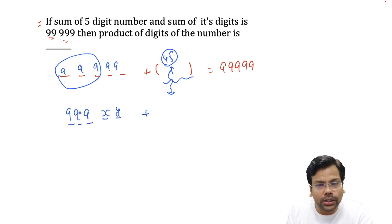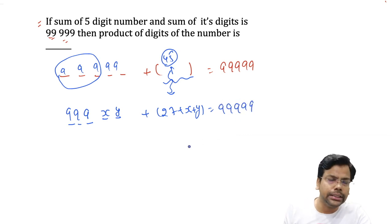And what will be summation of the digits? 9 plus 9 plus 9 plus 9 is 27 plus x plus y is equal to 5 times 9. This one we'll see. So we have to see what else we can do.